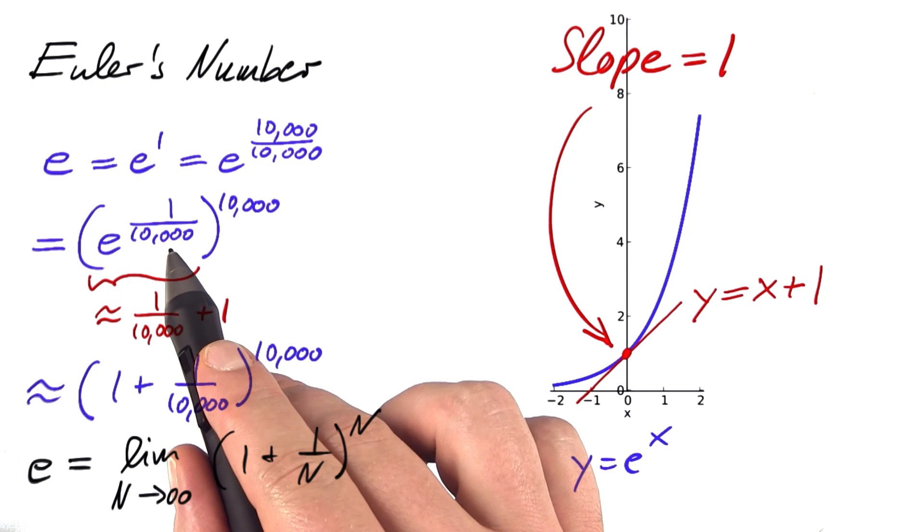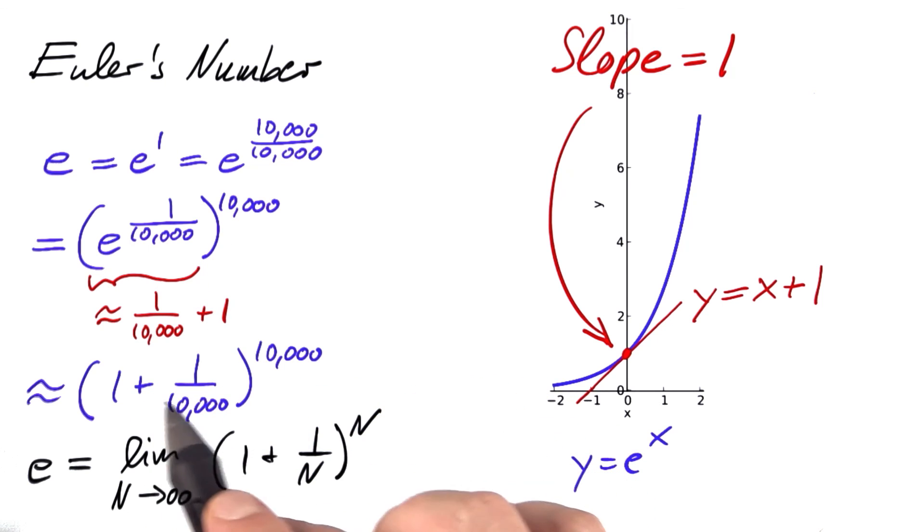The larger this number gets, the better these approximations get. And the result is 2.7 something.